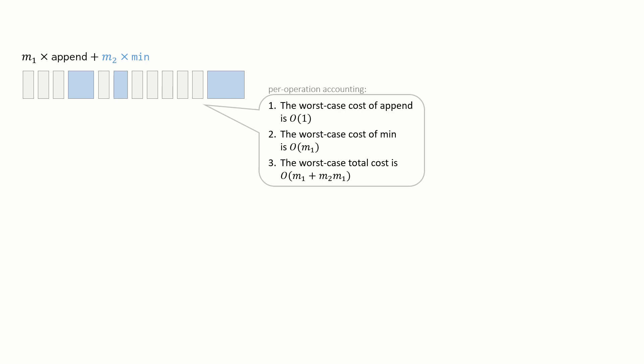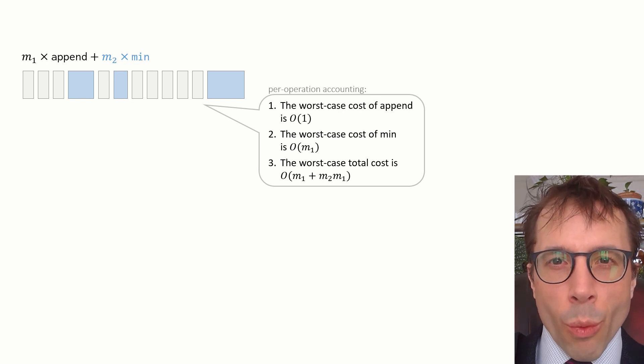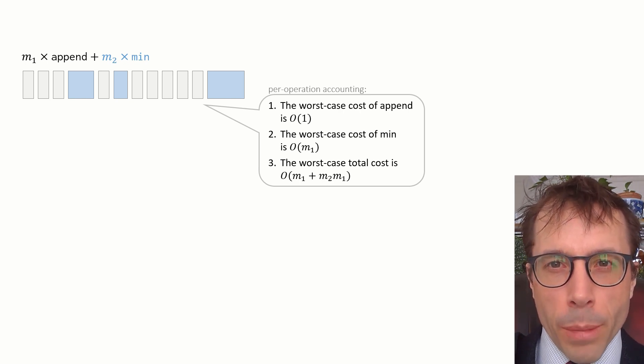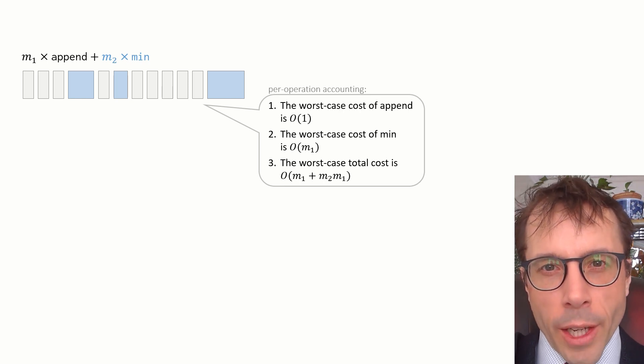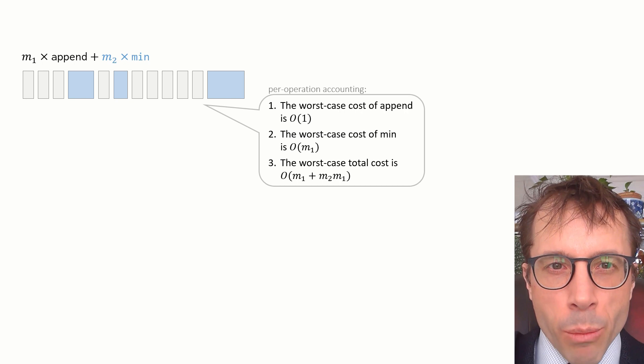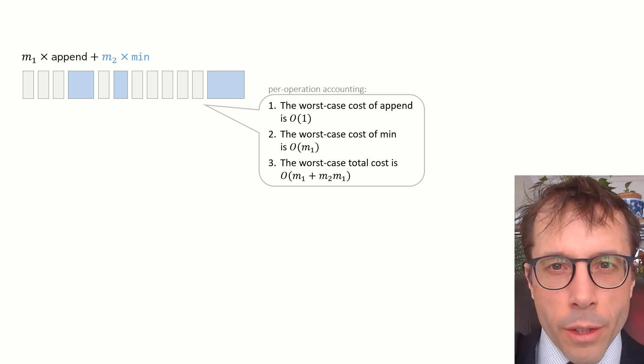This is how we'd do a simple per operation complexity analysis. Pause the video, have a read and make sure it's all what you'd expect. The only thing worth pointing out here is step two where we say the worst case cost of min is big O of m1. This is just because m1 is the maximum number of items there can be in the list, seeing as we've done m1 appends, and as we said earlier the worst case cost of min is big O of number of items.